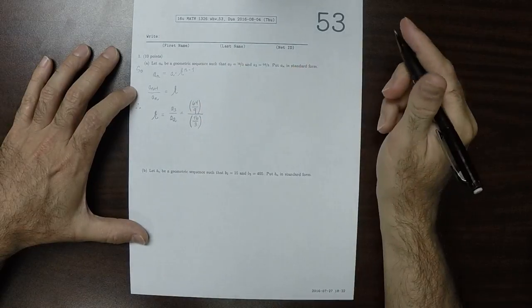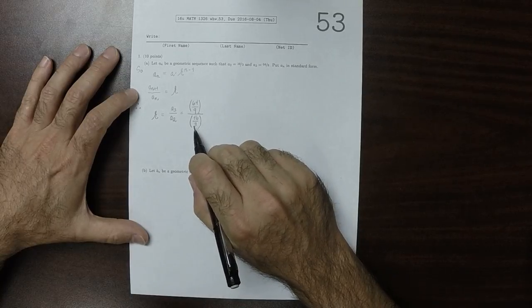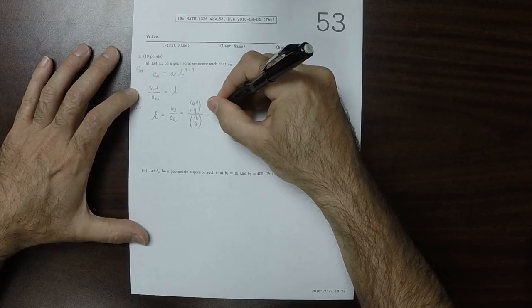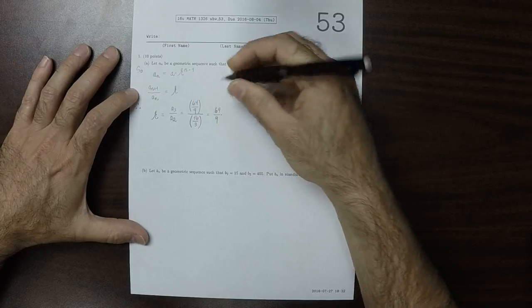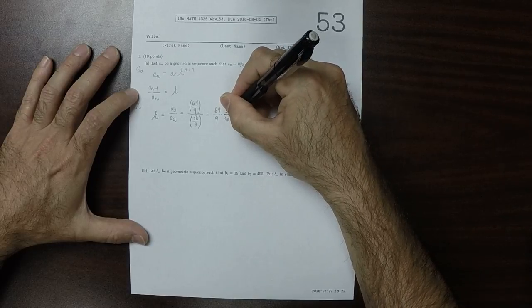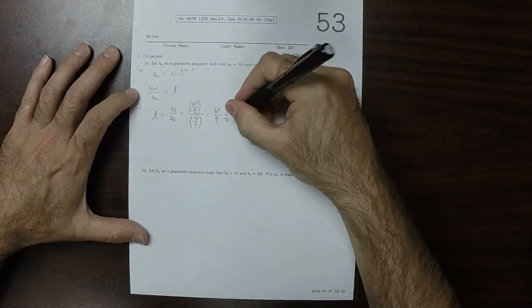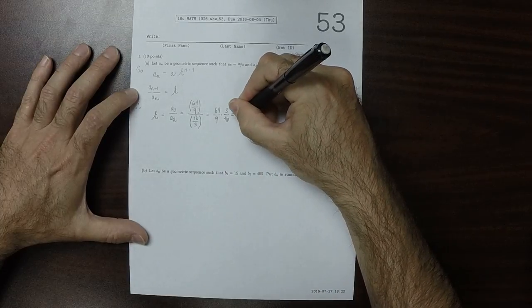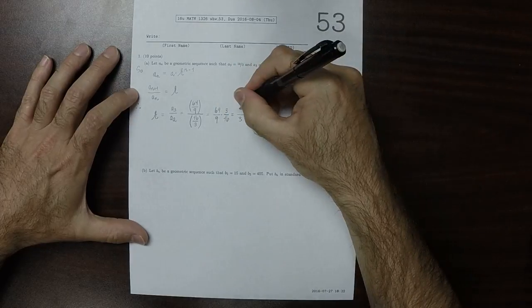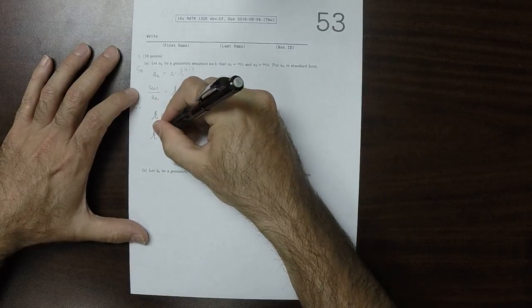And so division by a fraction, division by 16 over 3 is same as multiplication by its reciprocal. So this would be 64 over 9 multiplied by 3 over 16. Well, 3 over 9, that's 3 in the denominator, and 64 over 16, that's 4 in the numerator. So the ratio is 4 thirds.